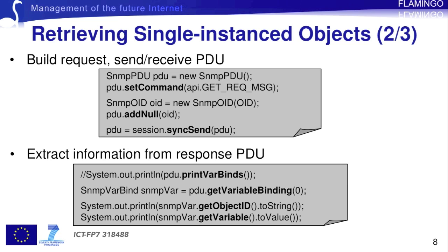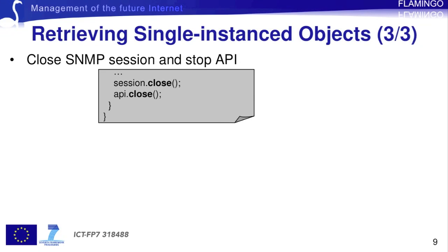To do that, we first need to create a new instance of the SNMPVarBind class called SNMPVar, and we assign to it the first element in the list of variable bindings of the response PDU. In this case we only have one binding since we only request the value of a single OID, but we could ask for multiple OIDs instead. In the last two lines, we print the OID and the associated value separately using the getObjectID and the getVariable methods respectively. The last step is to close the established session and the API thread.